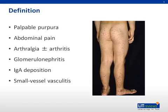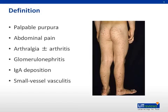HSP is predominantly a small vessel vasculitis. The photograph on this slide shows a patient's legs covered by slightly raised, palpable, purpuric lesions that are characteristic of HSP.